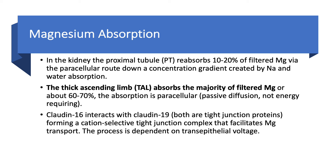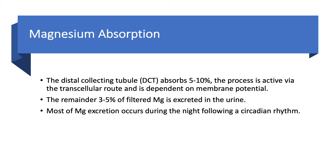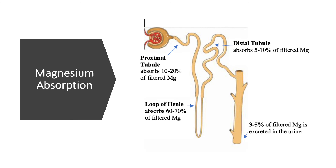The paracellular reabsorption in the thick ascending limb is facilitated by two tight junction proteins — claudin-16 and claudin-19 — which interact and form a cation-selective tight junction complex that facilitates magnesium transport, dependent on transepithelial voltage. The distal collecting tubule absorbs 5 to 10% of filtered magnesium via a transcellular, active process dependent on membrane potential. The remaining 3 to 5% of filtered magnesium goes into the urine. In summary: proximal tubule 10–20%, loop of Henle 60–70%, distal tubule 5–10%, and 3–5% excreted. Most magnesium absorption follows a circadian rhythm, occurring primarily at night.